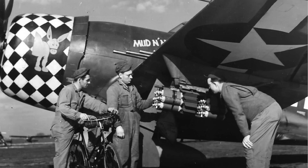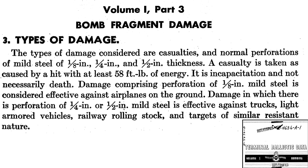Time fuses allow for predicted optimized ground fragmentation blast patterns. The damage fragmentation bombs can inflict on targets is described on this page from a 1944 terminal ballistics document, volume 1. Fragmentation damage is characterized by casualties and perforation of mild steel plates of thicknesses of one-eighth, one-fourth, and one-half inch. A casualty is defined by a fragmentation projectile hitting with an energy of 58 foot-pounds.